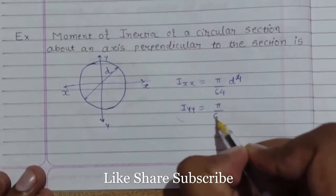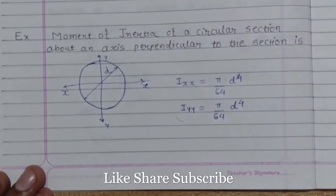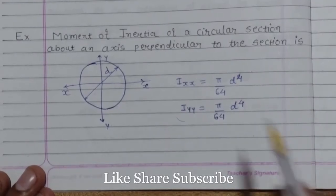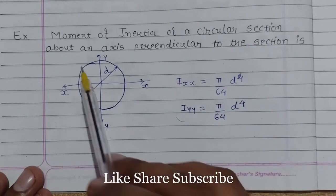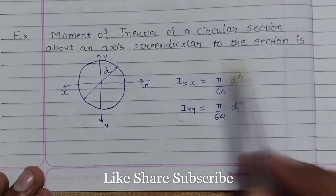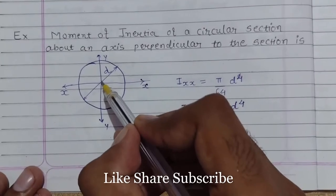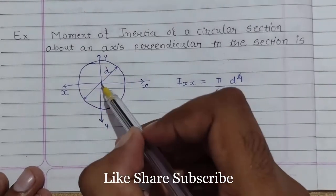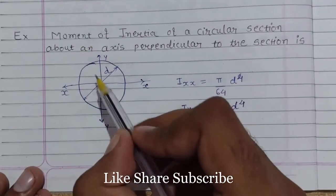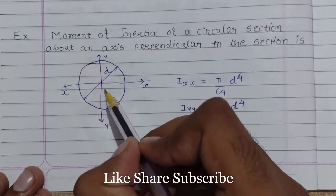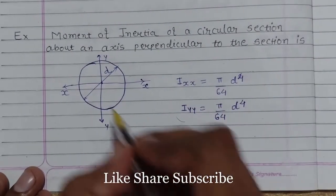Now our task is we have to find out the moment of inertia of a circular section about an axis perpendicular to the section. So we have to find the moment of inertia about the perpendicular axis which is perpendicular to this disc, and also we can assume that axis is perpendicular to the plane of this paper, Izz.